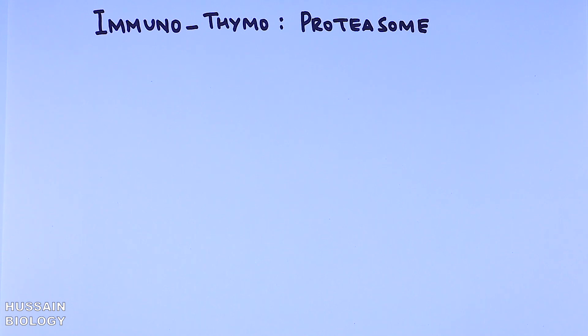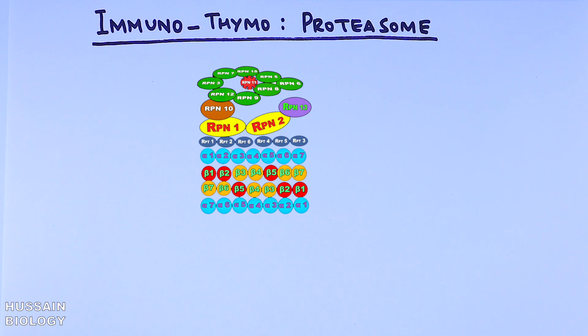Here in this diagram we can see the 26s proteosome, that is the standard proteosome. It's having 19s as a regulatory subunit and 20s as a core subunit.